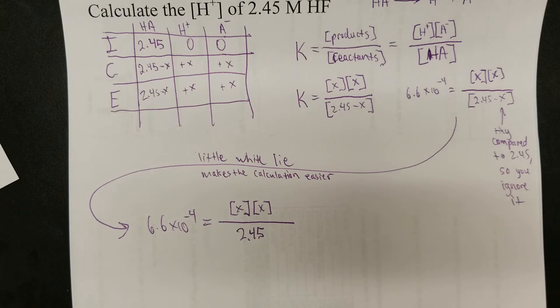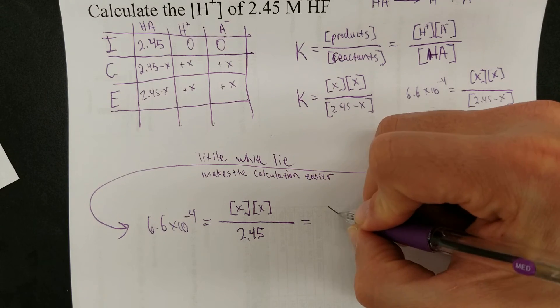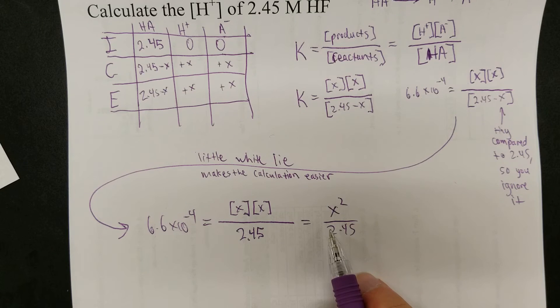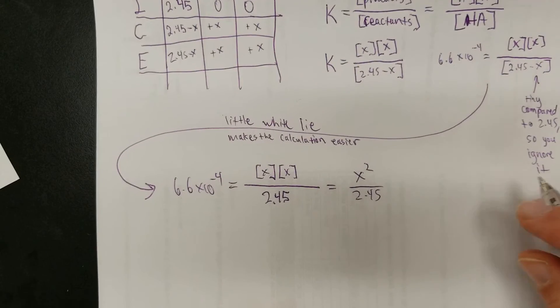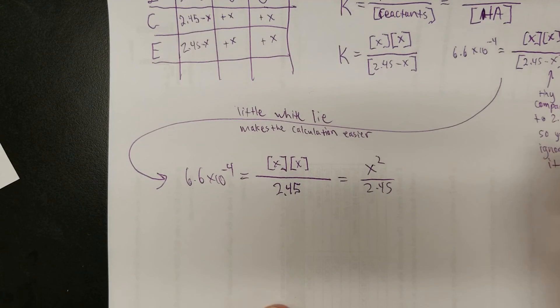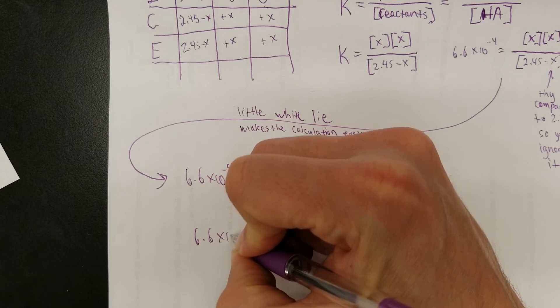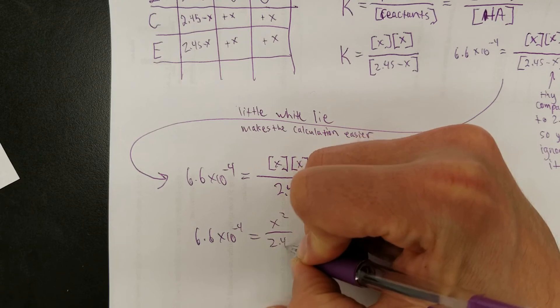So now it's just a matter of solving for X. After all, if you have X times X, that is X squared over 2.45. So, I'm going to times both sides by 2.45. Let's see. So, actually, in order to, I should make this a little clearer what's going on here. 6.6 times 10 to the negative fourth equals X squared over 2.45. We're not paying, we'll deal with units at the end.